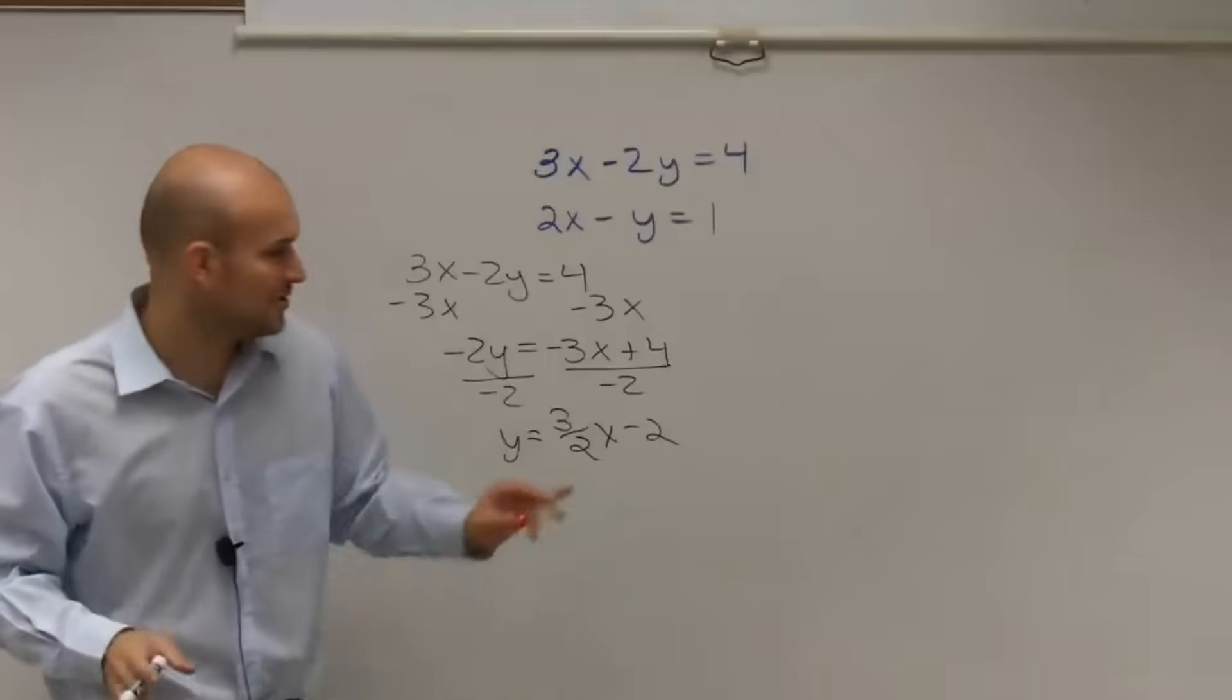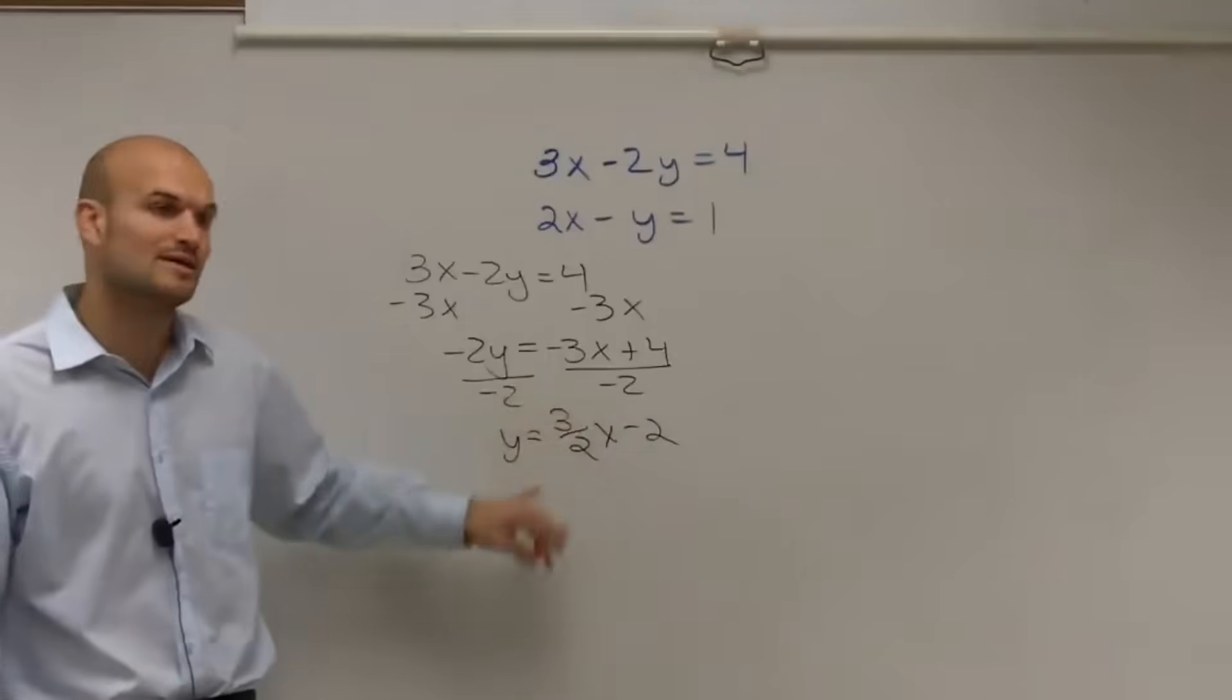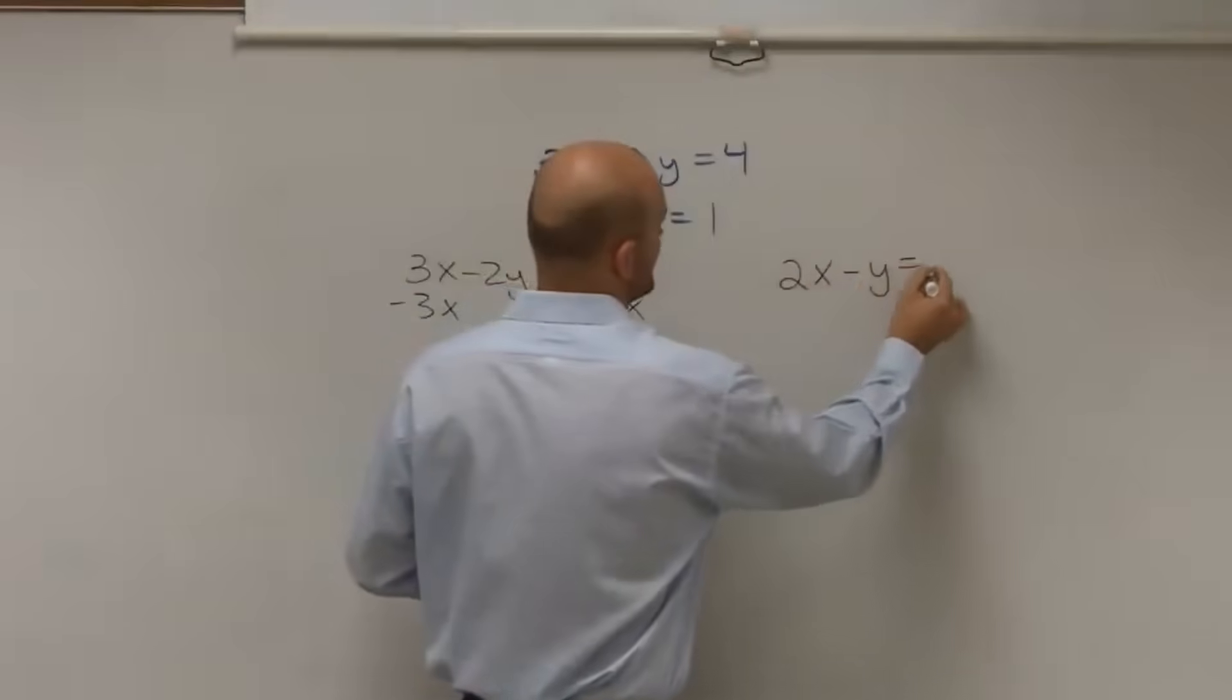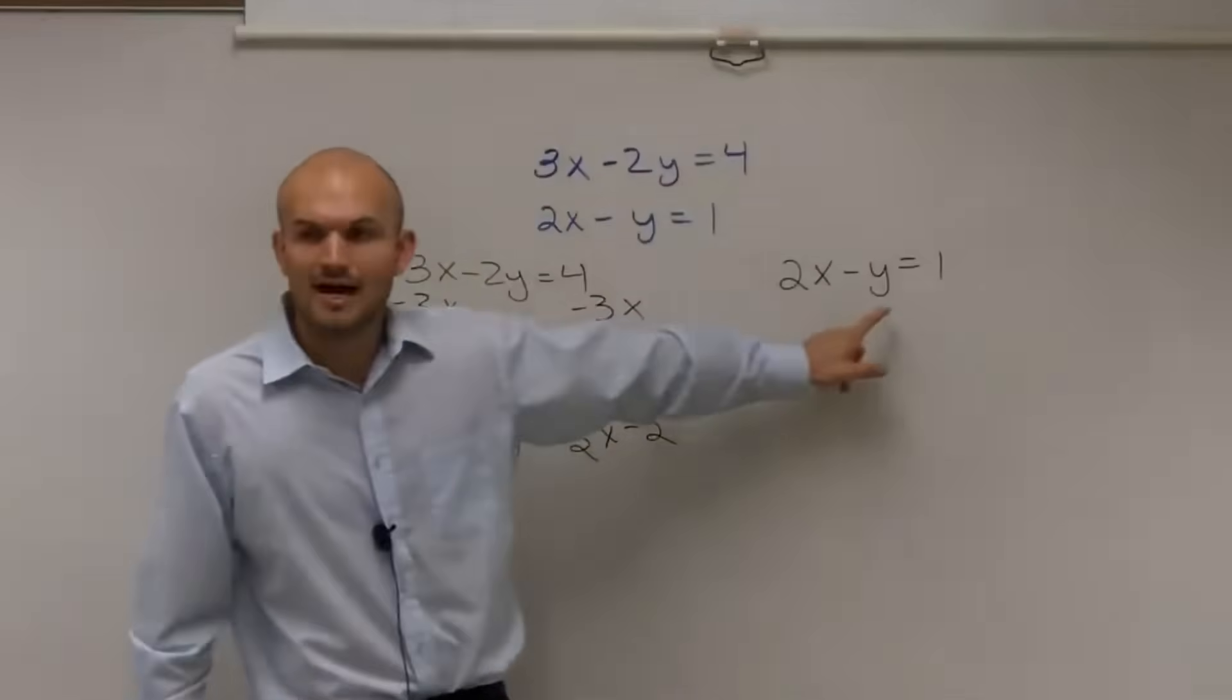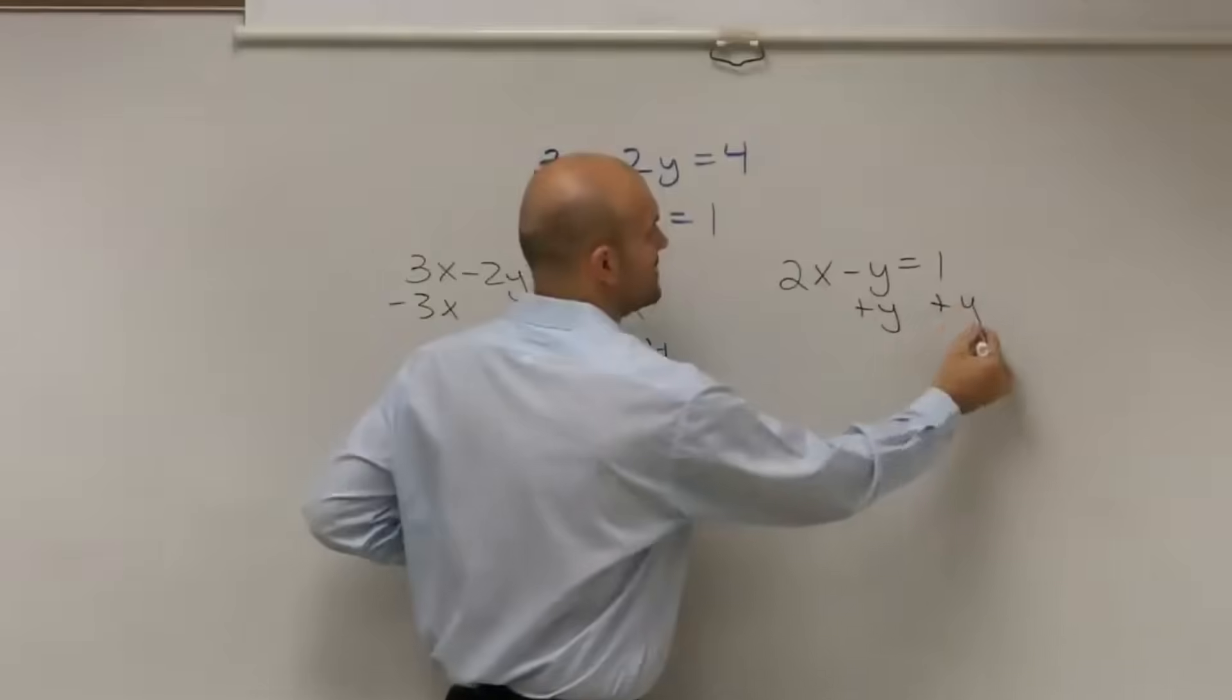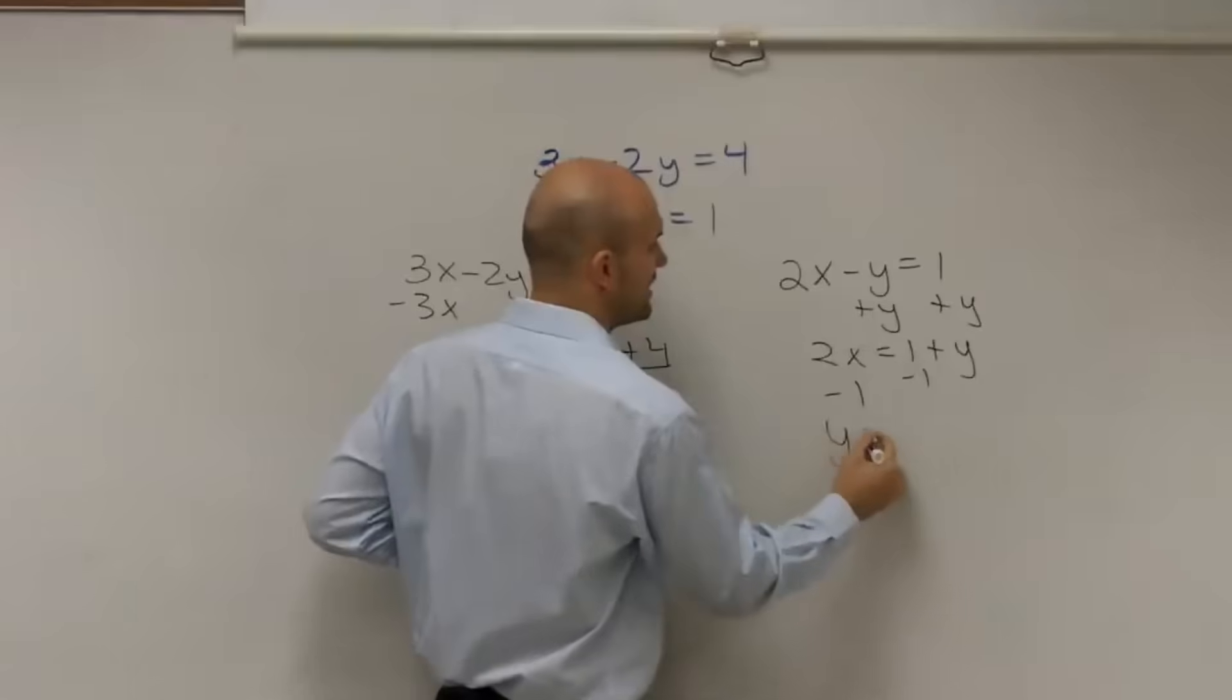Now a lot of you might say, ooh, fraction, I don't like it. But remember, this is our slope, so this is actually going to be very helpful when we go ahead and try to graph this line. The next one, 2x minus y equals 1. Now I'm just going to get the y by itself. I could subtract the 2x and then divide by negative 1, but for this problem, I'm actually going to add the y to the other side. So I have 2x equals 1 plus y, and then I'll just subtract the 1. So my final answer is y equals 2x minus 1.